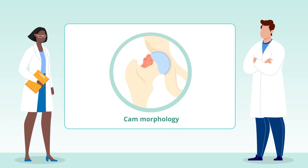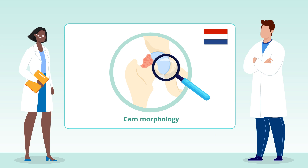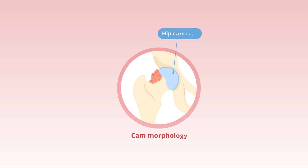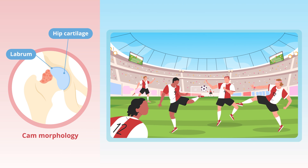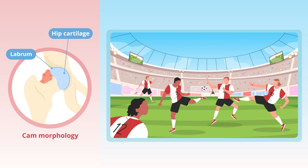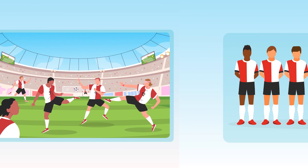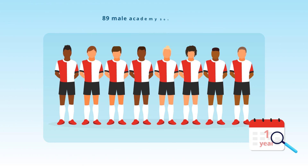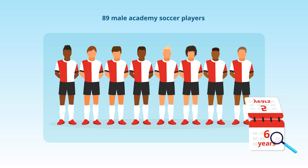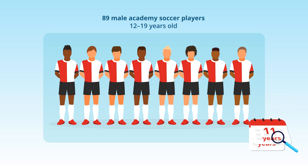In a recent study conducted in the Netherlands, researchers sought to understand how cam morphology affects the health of the hip cartilage and labrum in young athletes who played professional soccer during skeletal growth. The researchers followed 89 healthy male academy soccer players, aged 12 to 19 years, from the Dutch soccer club Feyenoord for 12 years.